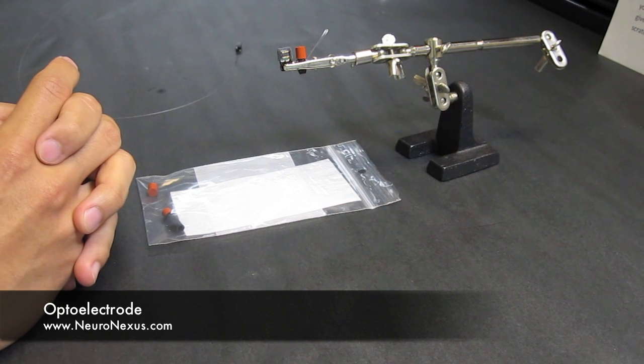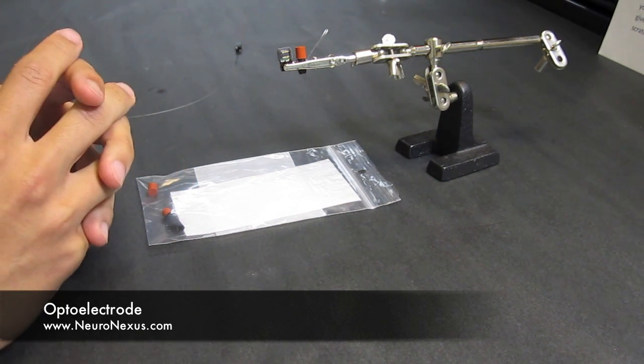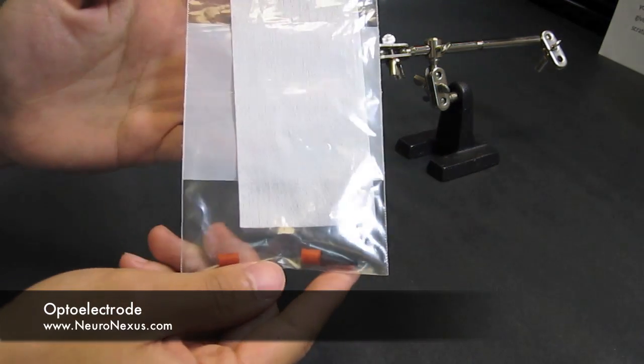Regardless of the kind of coupler you have, keeping the ferrules covered and clean is really important. We provide a spare cap and some cleaning wipes as extras in your order.